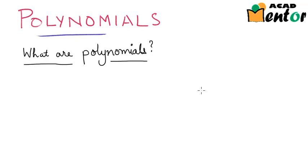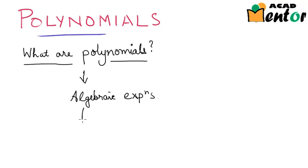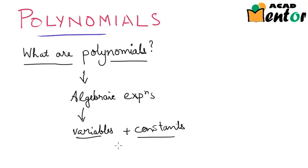Let's start this chapter on polynomials by answering the basic question: what are polynomials? Polynomials are a special type of algebraic expressions. Algebraic expressions are nothing but a combination of variables and constants. We'll start by answering what are variables and what are constants, then look at algebraic expressions, and finally come to what polynomials exactly are.